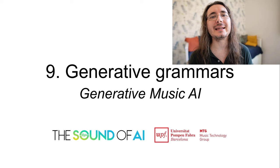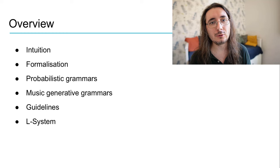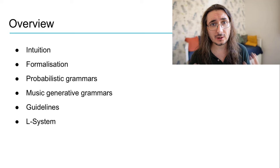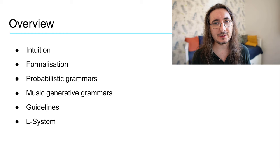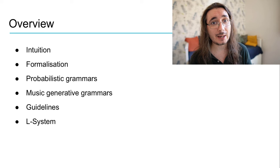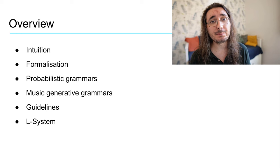Today we're going to be starting our journey by looking at generative grammars and we'll cover quite a lot of terrain. We'll start by looking at the intuition behind generative grammars, then we'll formalize them, and look at a particular type called a probabilistic grammar. Then we'll move on to how to leverage generative grammars for music generation, and I'll suggest some guidelines to design them. Finally we'll look at a particular type called a Lindenmayer system, or L-system.